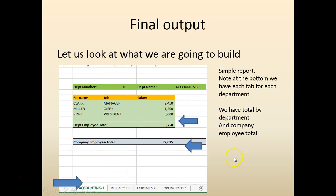Let's look at the output we are going to build. The template will show the department name and the employees in each department along with the total salary for that department, and also keep a company-wide total salary. At the bottom you can see the department and a number next to it - for example, Accounting has three employees and Research has five employees.